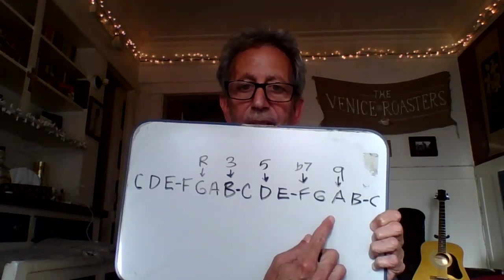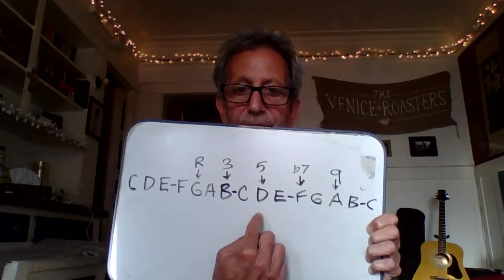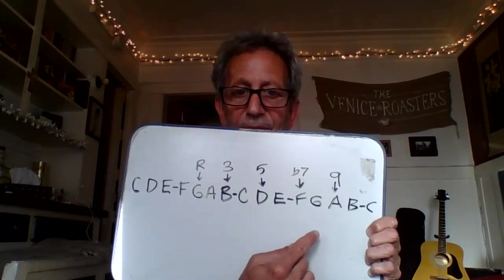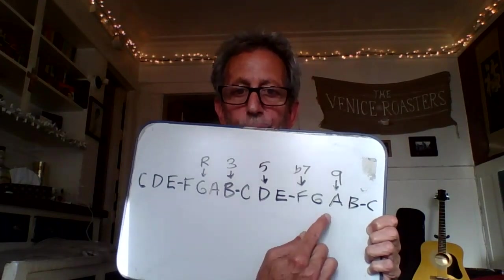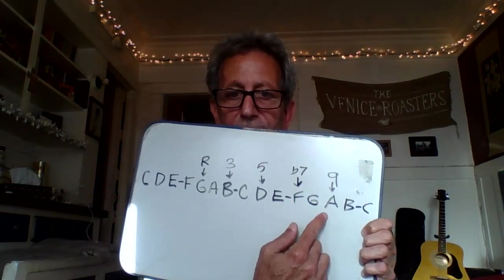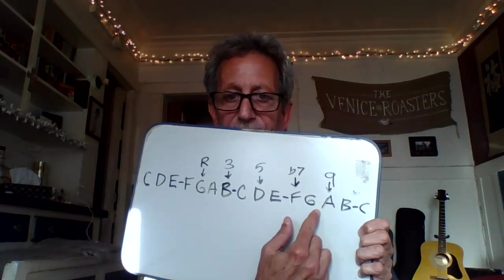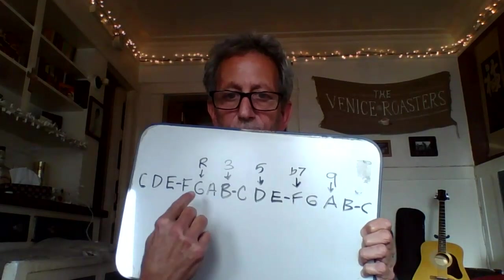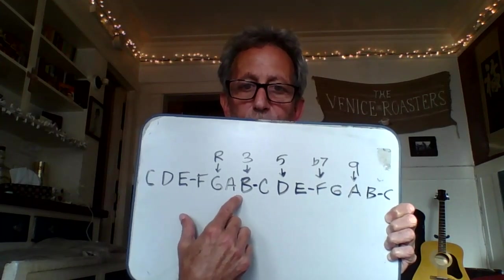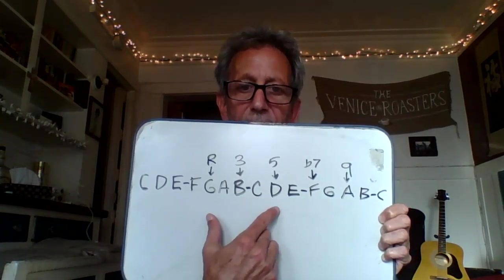The ninth, like the fifth, has the ability to be altered up — as in a sharp five — or altered down, as in a flat five. You can sharp a nine or flat a nine. But look what happens when I sharp the nine: I get a B flat note. A sharp is the same as B flat. If we look at the third of the G chord, we have a B natural, so a B flat would be the flat third, thus making a minor chord.